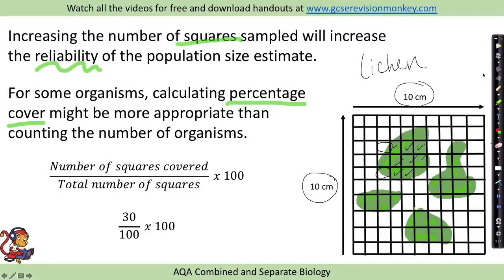So when we've got this, we use the equation, the number of squares covered divided by the total number of squares times 100, and this will give us our percentage cover. So if I've estimated that 30 squares in total are covered by the lichen, there are 100 squares on the grid, so 30 divided by 100 times 100 will give us an answer of 30% coverage.